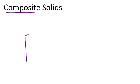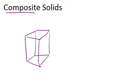For example, if we took a rectangular prism and attached to the top of it a pyramid, then this would be a composite solid because it is a solid that is made up of two other solids: a prism and a pyramid.